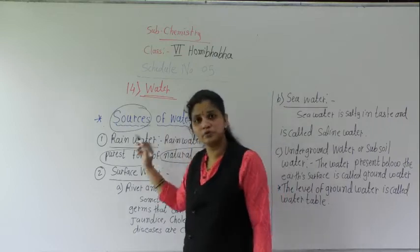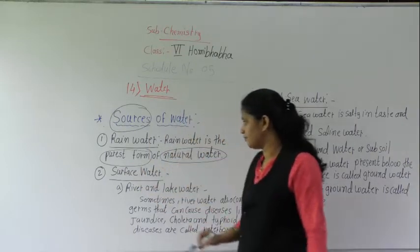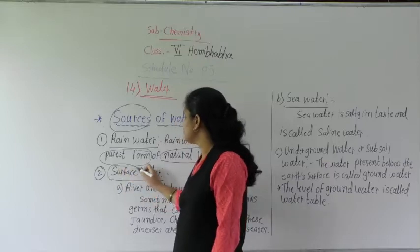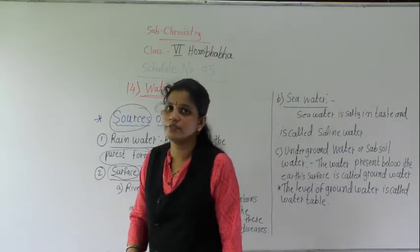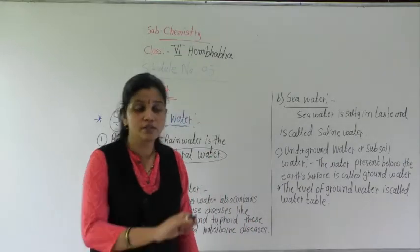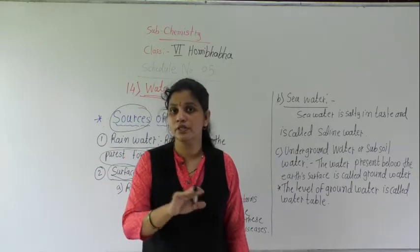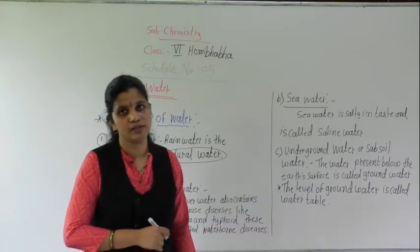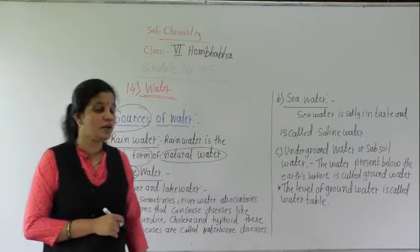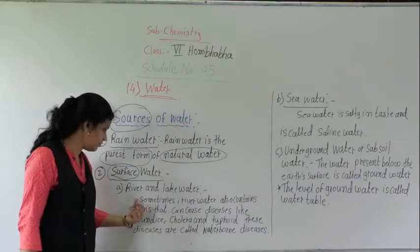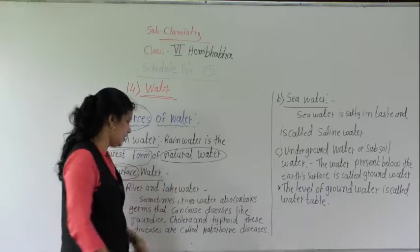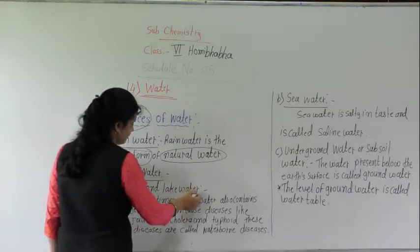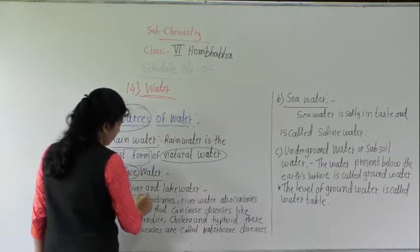The first major source of water is rainwater. Now the second one is surface water. Surface water means the water which is present on the surface of the earth. That water is known as surface water. Which ones come in that? First, river and lake water. River and lake water — what will come? River and lake water.